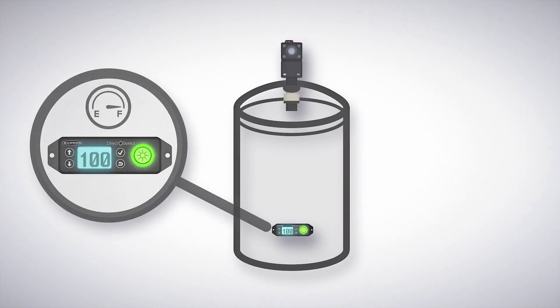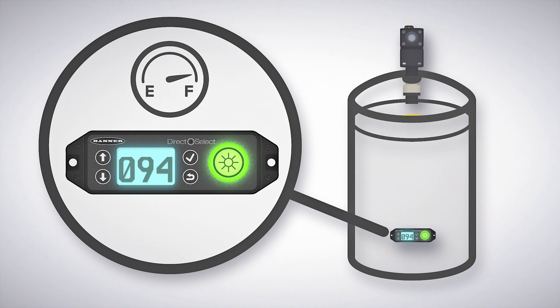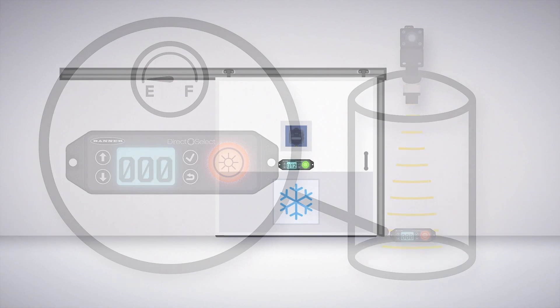Here, a DirectSelect is being used to indicate the amount of liquid in the tank. As the available volume changes, the LCD display reflects that. Meanwhile, the visual indicator alerts workers if the tank is getting low.